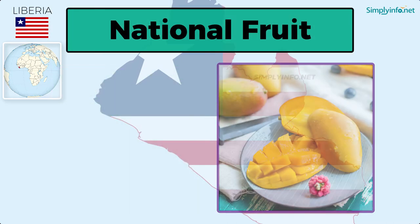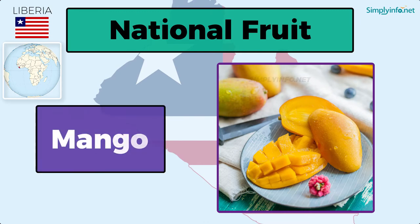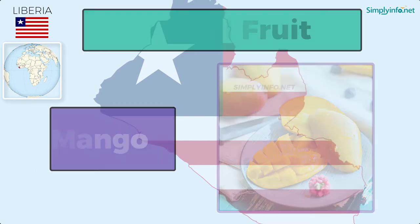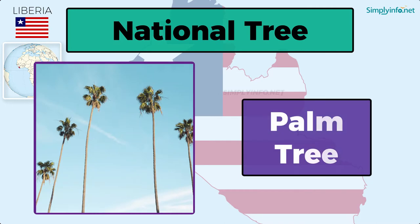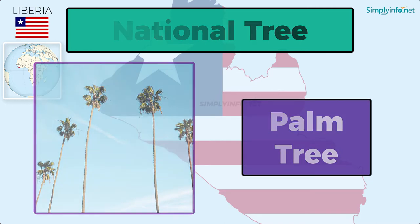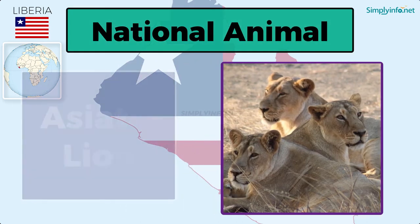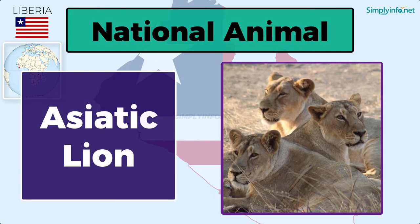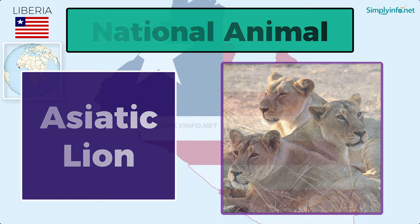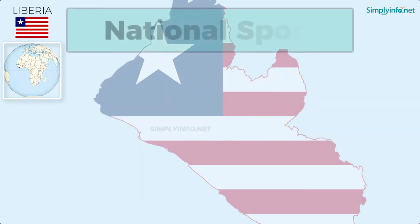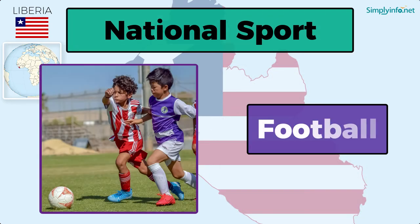National fruit: mango. National tree: palm tree. National animal: Asiatic lion. National sport: football.